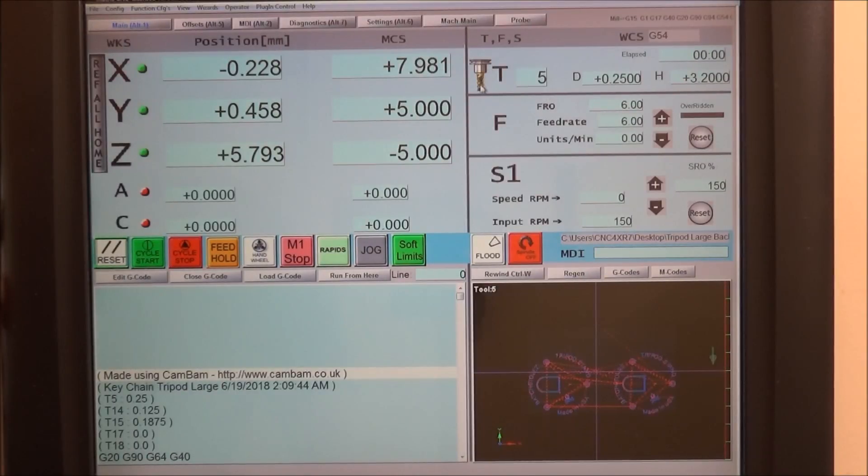We have a tool symbol here, and when you call for a tool change this will blink yellow. Of course we have our feed rate, and again we can override this with our up and down buttons here. And our spindle speed and our RPM that we're currently running, again buttons to override that.